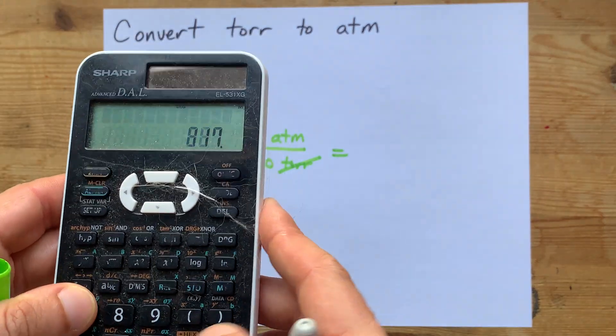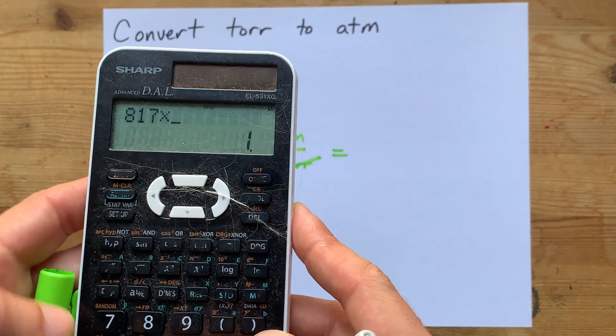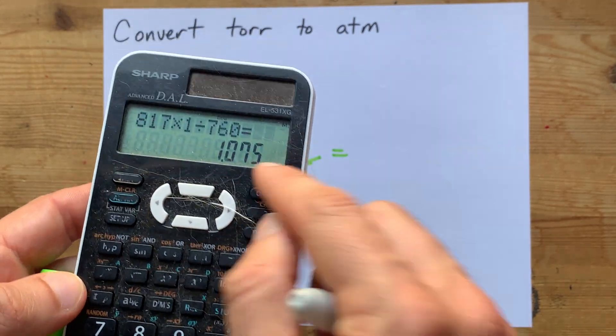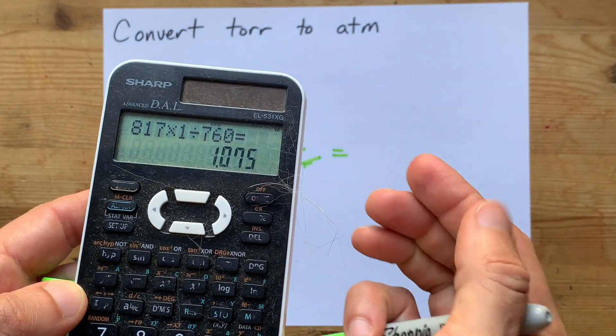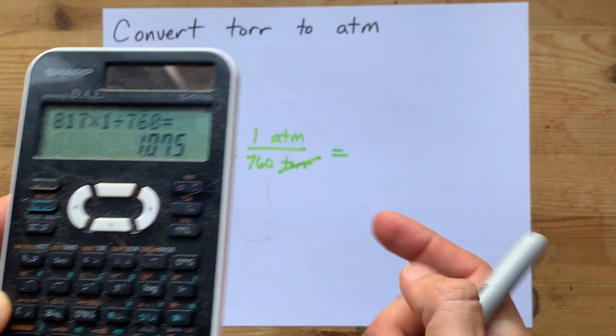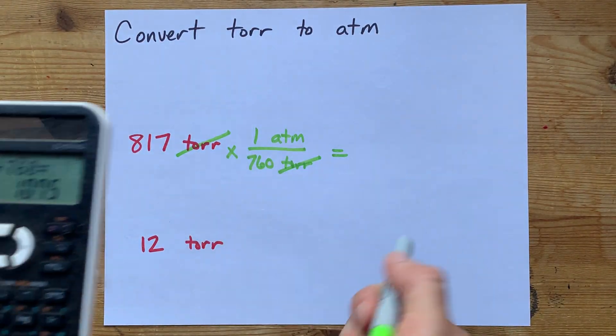Now again, that's 817 times 1 divided by 760. You do not have to type the times 1. That's why I say the shortcut here is just divide by 760.